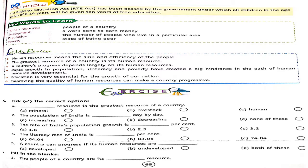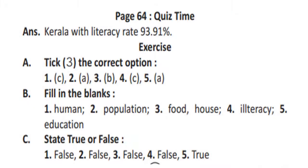Now we have just completed the lesson. As you can see on your screen, there are four new words. You have to write them in your notebooks and learn them. Here is your exercise work which you have to complete — sections A, B, and C in your books.